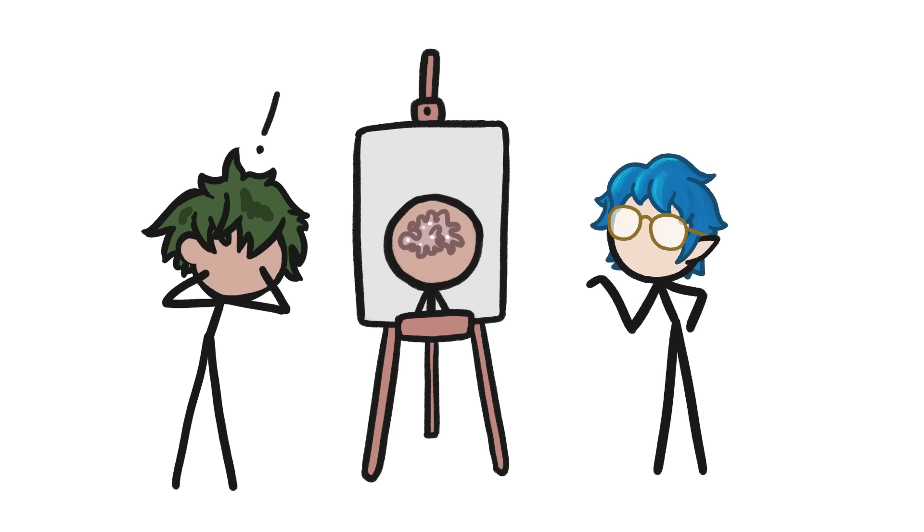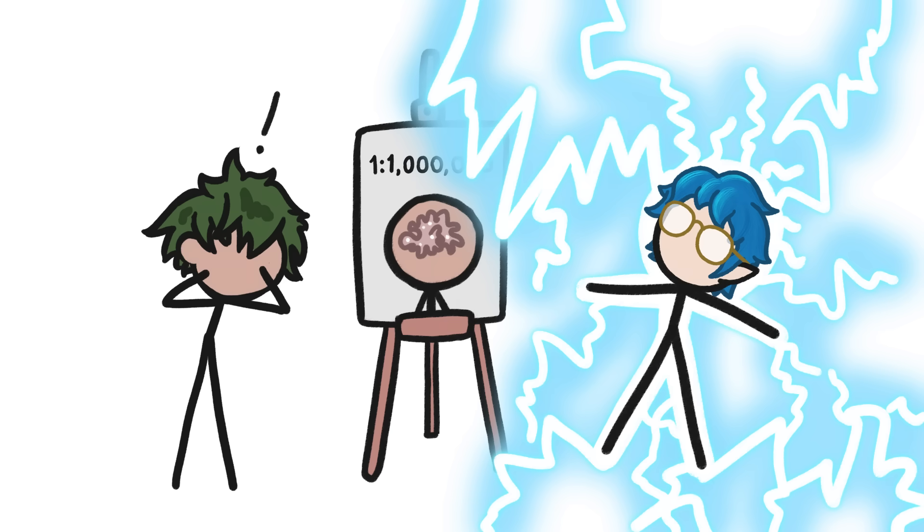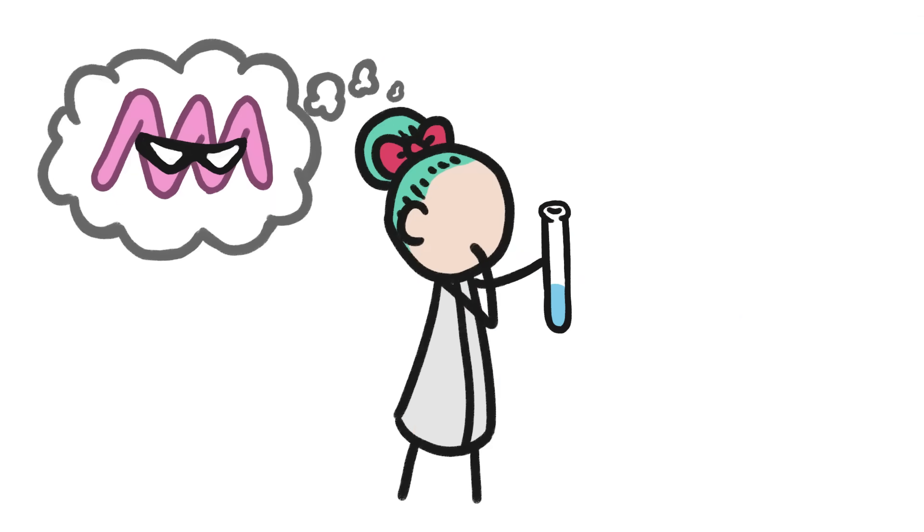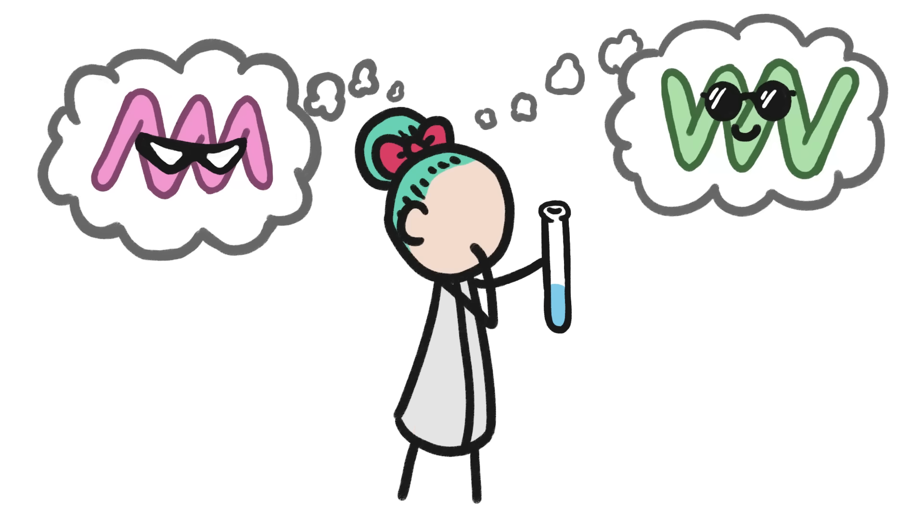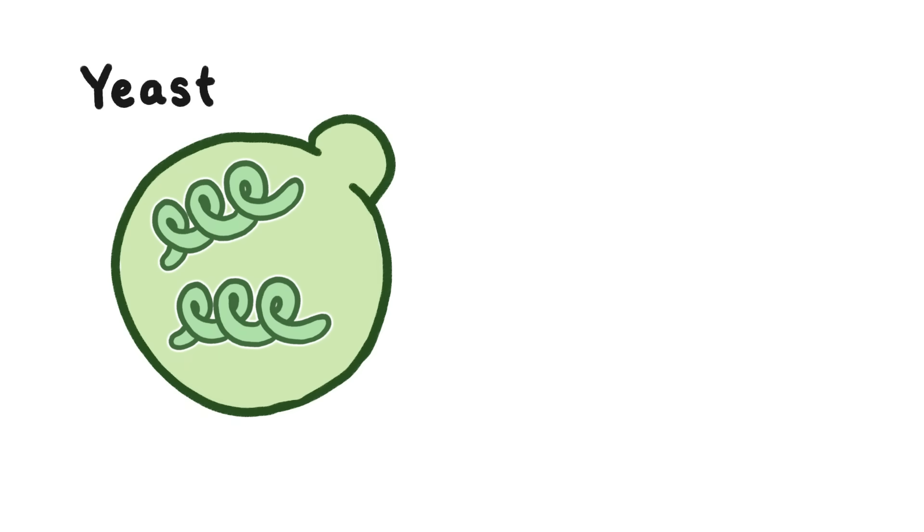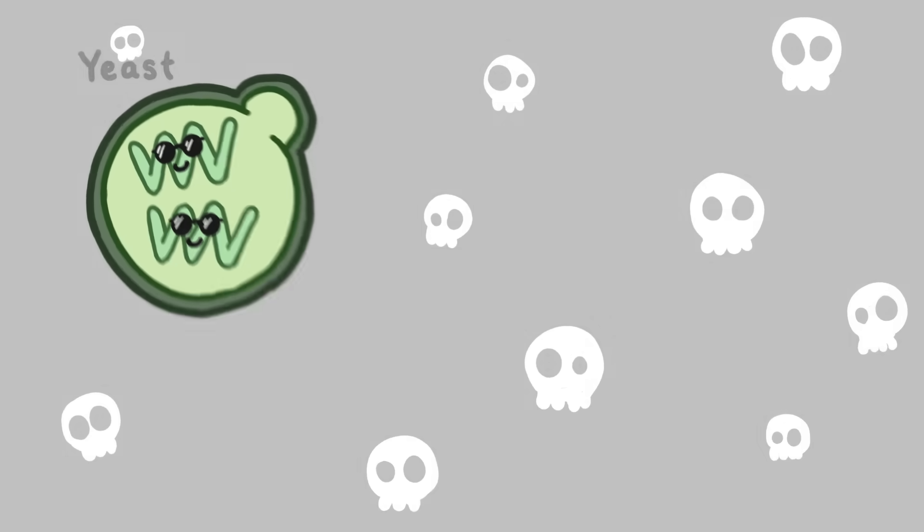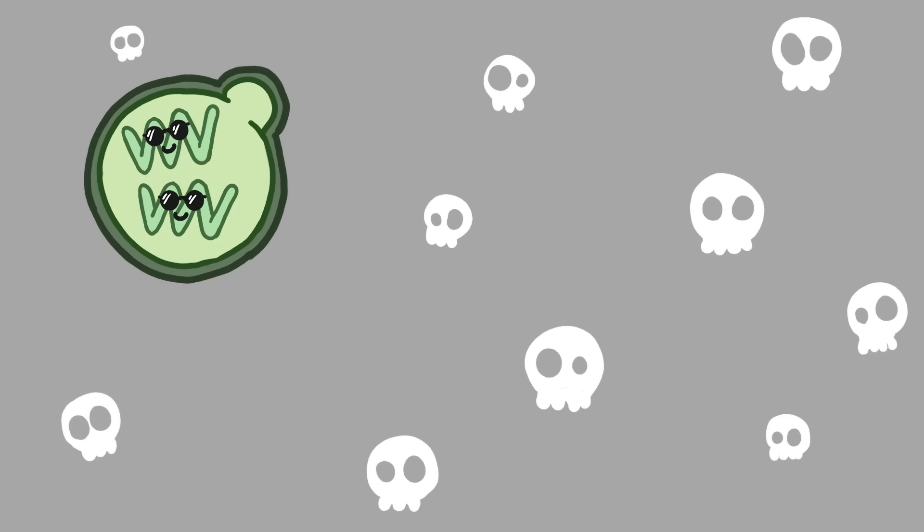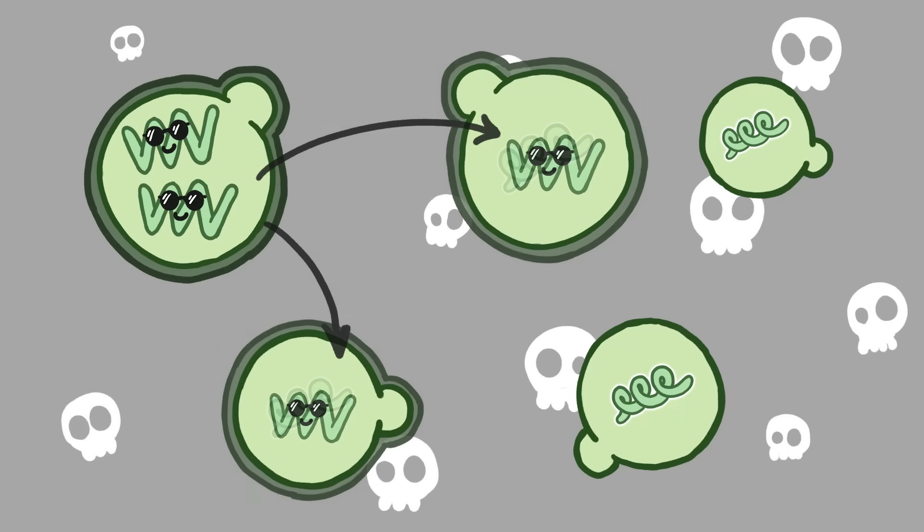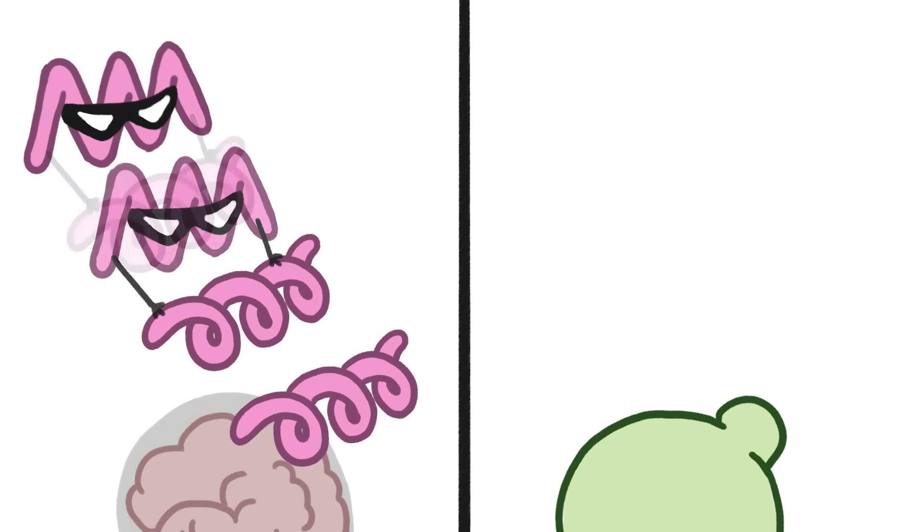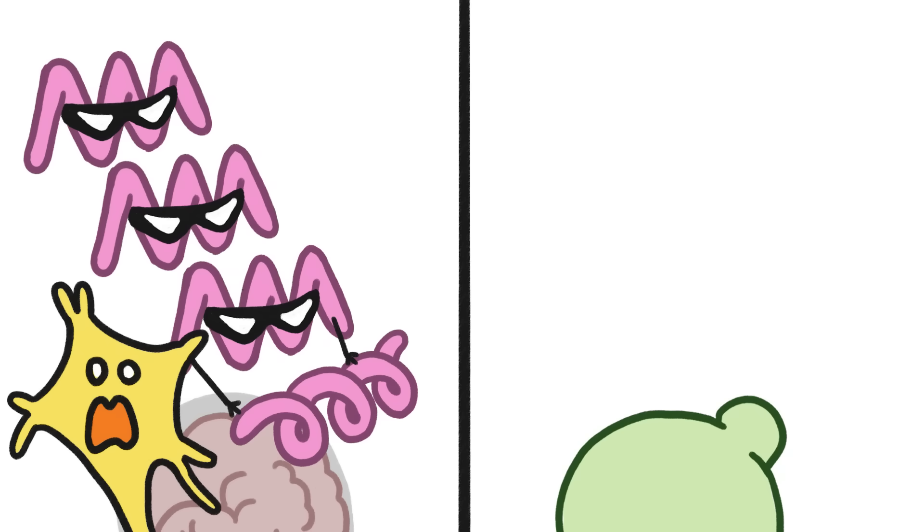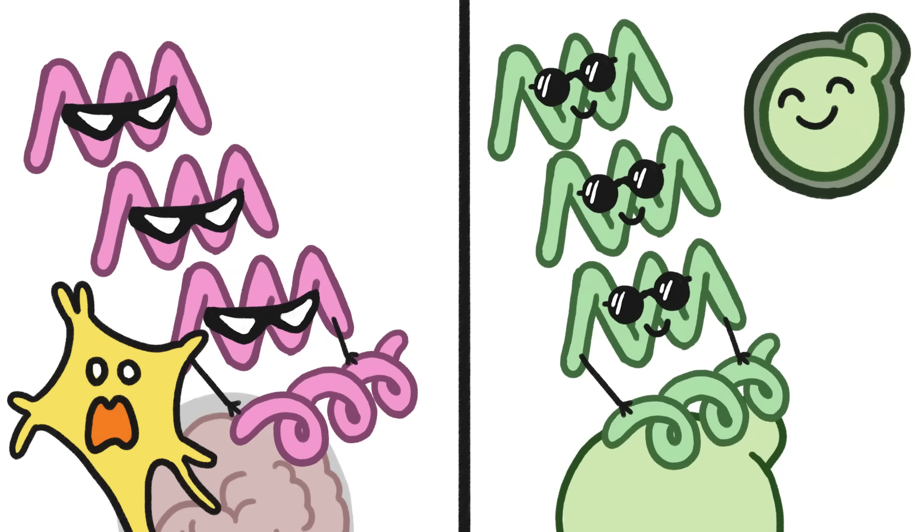But don't freak out. Creutzfeldt-Jakob disease is extremely rare. It's just as common as being struck by lightning. And actually, scientists have recently discovered that prions aren't all bad. For example, when a particular protein in a yeast cell misfolds, it makes the cell wall stronger, which helps the cell survive harsh conditions. And that misfolding can be passed along to other yeast cells. So while the chain reaction triggered by a simple misfolding is really dangerous in some circumstances, it can be a lifesaver in others.